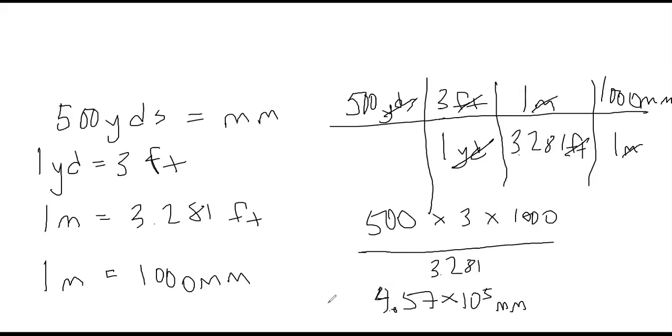I got 4.57 times 10 to the fifth millimeters. For a test or quiz where we have to show our work, do you always want it expressed in scientific notation or just with a certain amount of significant digits? That's a good question. I just really want the correct answer. It doesn't matter to me. You won't lose points if you do it in scientific notation or if you do it long hand.